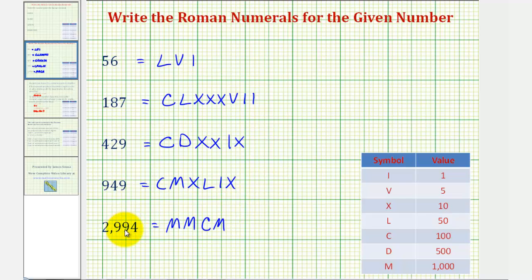And then for 90, we'll have to use the subtraction principle and put 10 before 100, or an x before a c. So there's the 90. And then finally, for four, we can't use four i's. We'll have to use an i before a v, or a 1 before a 5, so we subtract. So we have i and then v. So we have 2,994.